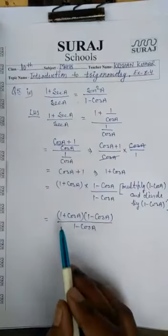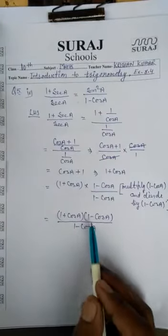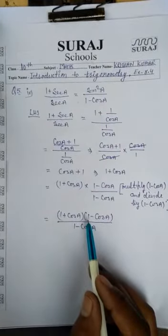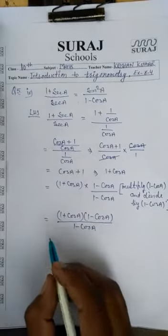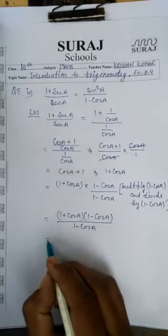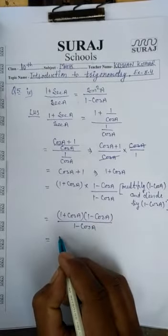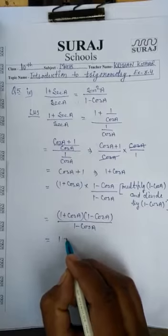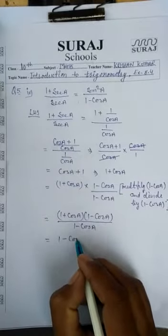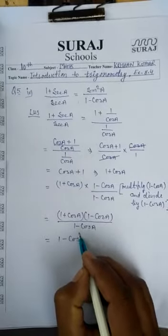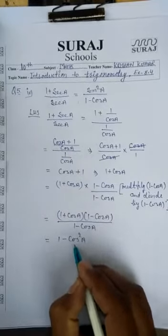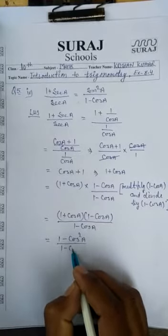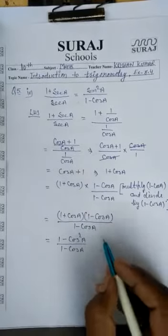The numerator has the formula A plus B into A minus B. So that gives A squared minus B squared, which is 1 squared minus cos squared A, upon 1 minus cos A.